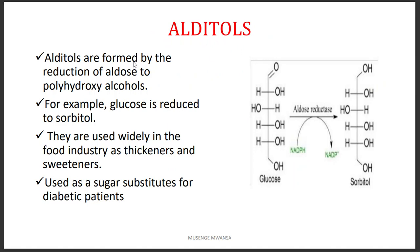We also have alditols, formed not by oxidation but by reduction. The aldehyde functional group is reduced, so we no longer have an aldehyde functional group. When we reduce glucose, we form sorbitol. This happens when NADPH is converted to NADP+, in the presence of the enzyme aldose reductase. Alditols are used as thickeners and sweeteners, and also as sugar substitutes for patients with diabetes.